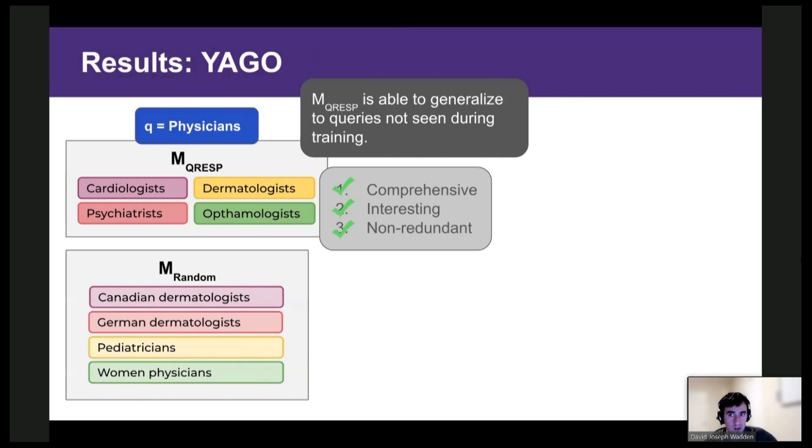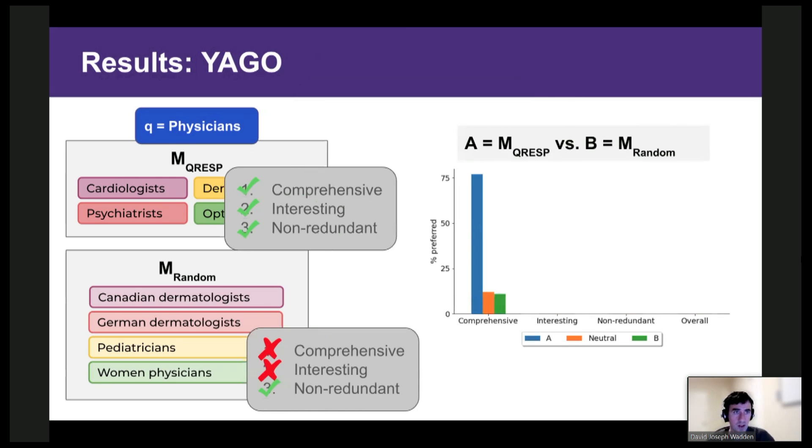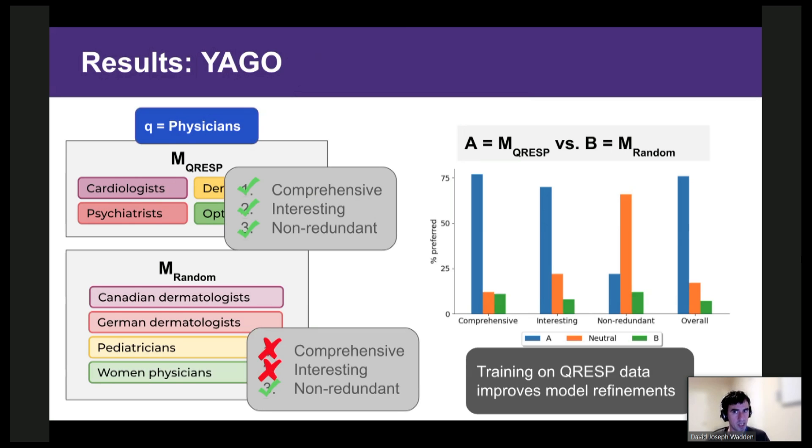Meanwhile, here are the refinements for models trained on random subcategories. We see that these refinements aren't comprehensive or interesting. For instance, they mention dermatologists from two different countries. And we found that these observations held true more generally. So this plot shows the results of our evaluations on 100 held-out YAGO queries. The blue bar indicates the percentage of queries where the QRESP model was preferred. Green indicates random. And orange is neutral. And we see here that QRESP is more comprehensive for 75% of the queries. And we see the same trend for interestingness. There's less of a difference for non-redundancy, which again agrees with the example here. The random one isn't particularly redundant. And finally, QRESP is heavily preferred by annotators for overall quality. So these results show pretty strongly that our procedure for selecting training data leads to a better refinement model.